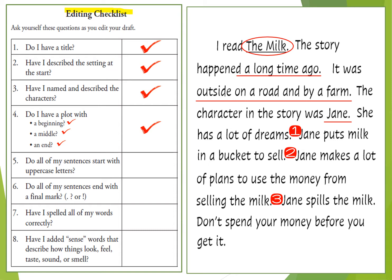Number five asks: do all of my sentences start with uppercase letters? The capital I starts that sentence. There's the end of a sentence, so the next letter is a capital. They end with a period, so the next letter is capital. The character in the story was Jane period — my next sentence has a capital letter. She has a lot of dreams period — my next sentence has a capital letter. Each subsequent sentence has a capital. Check, that one is complete.